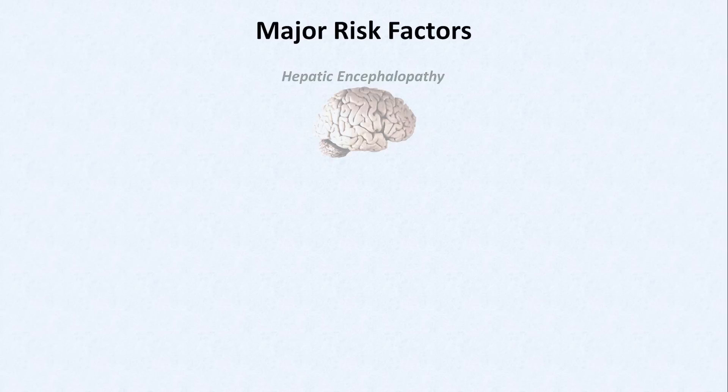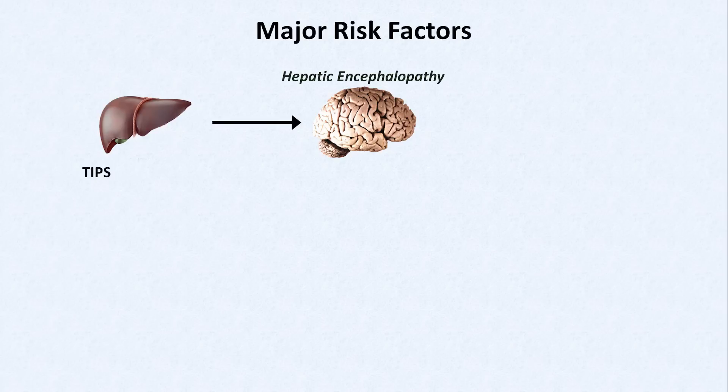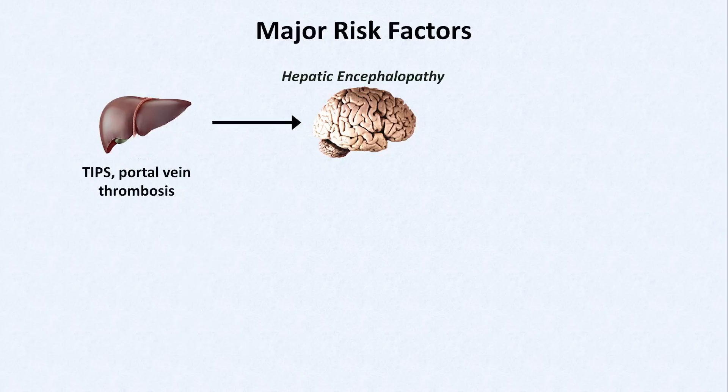There are many risk factors for developing encephalopathy. The biggest of these is a side effect of a procedure called TIPS, which stands for transjugular intrahepatic portosystemic shunt, in which an artificial channel is percutaneously created between the portal vein and the hepatic vein. By decompressing the portal venous system, this procedure reduces the probability of bleeding from esophageal varices and makes ascites easier to treat. However, the risk of encephalopathy is much worse. Another risk factor localized to the liver is portal vein thrombosis, for similar reasons.